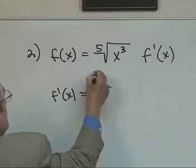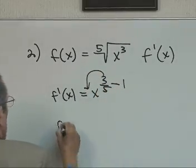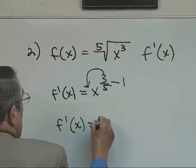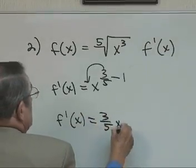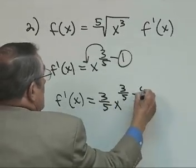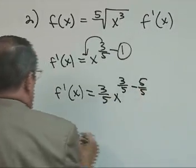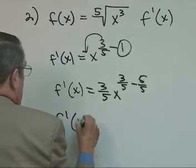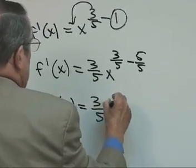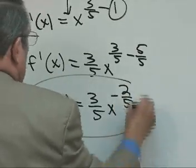So if I bring this around to here and subtract 1, f prime of x is going to be equal to 3/5 x to the 3/5 minus 5/5. So f prime of x is equal to 3/5 x to the negative 2/5.